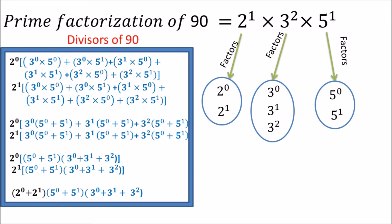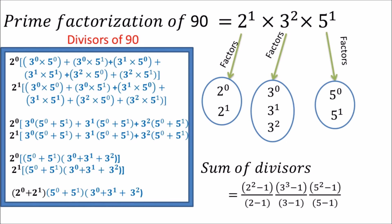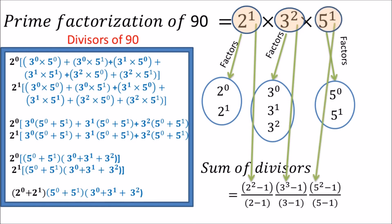Observing all three brackets at the end, all three terms form a geometric progression. Applying the GP sum formula, the first bracket gives 2 squared minus 1 upon 2 minus 1, the last bracket gives 3 cubed minus 1 upon 3 minus 1, and the middle bracket gives 5 squared minus 1 upon 5 minus 1, from which we can calculate the sum of divisors of 90. Comparing with the prime factorization, 2 squared is obtained by adding 1 to the power of the prime factor 2, 3 cubed by adding 1 to the power of 3 squared, and 5 squared by adding 1 to the power of 5 raised to 1.